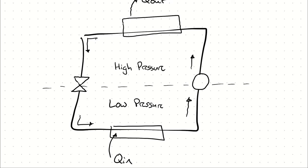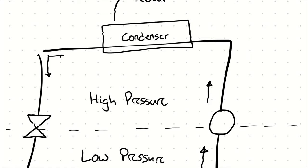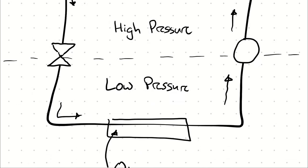On the high pressure side, that vapor going to liquid occurs in a condenser. On the low pressure side, the liquid becoming a vapor occurs in an evaporator.